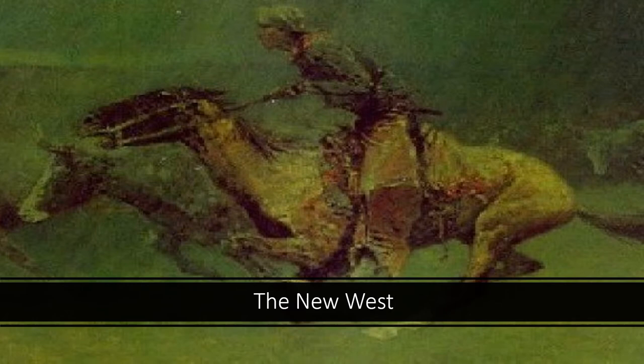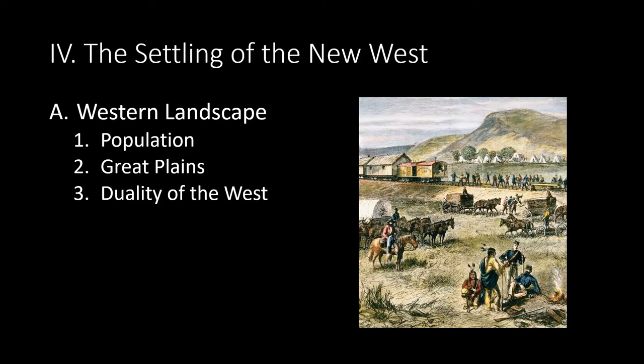The New West — The Settling of the New West: Between 1870 and 1900, Americans settled more land than had been occupied before the Civil War. About a third of the American population lived west of the Mississippi River by 1900. The Great Plains offered little rainfall and few rivers or trees, which seemed useless to the pioneer — also called the Great American Desert. White settlers believed one could not make a living there. This would change with the coming of the Transcontinental Railroad and the subduing of Native Americans in the latter part of the 19th century.